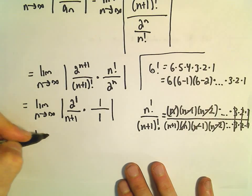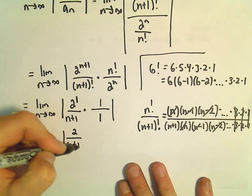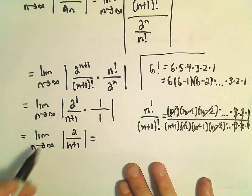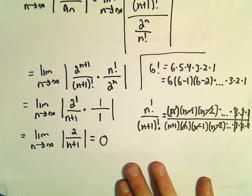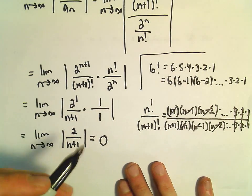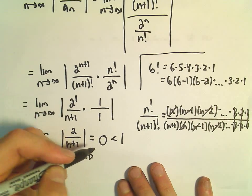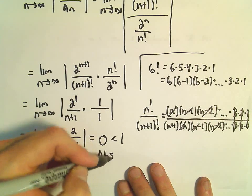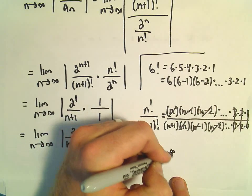So in this case, we've got the limit as n goes to infinity of 2/(n+1). As n goes to infinity, the denominator gets large. 2 over a large number is 0. The limit is 0. And since that's less than 1, our series is absolutely convergent.